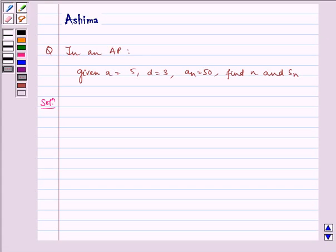Hello and welcome to the session. Let us discuss the following problem today. In an AP, given a is equal to 5, d is equal to 3, an is equal to 50, find n and Sn.